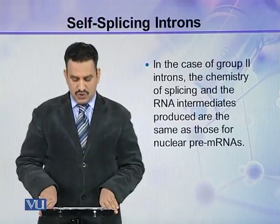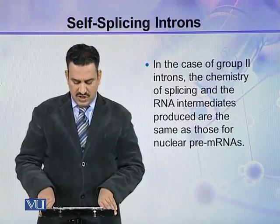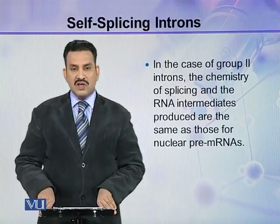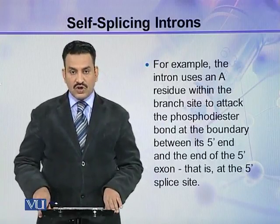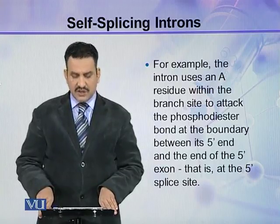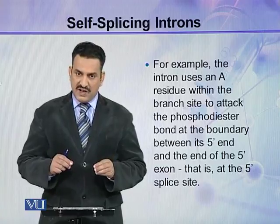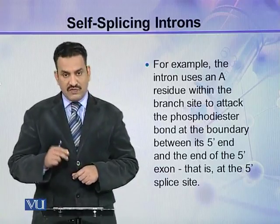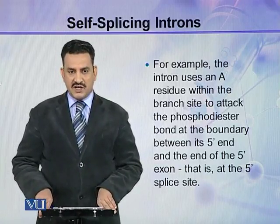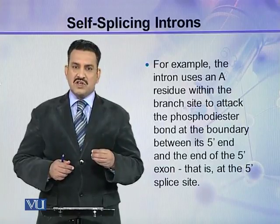In the case of group 2 introns, the chemistry of splicing and RNA intermediates produced are the same as those produced in the case of nuclear pre-mRNAs. For example, the intron uses an A residue within the branch site to attack the phosphodiester bond at the boundary between the 5' end of the 5' exon — that is, at the 5' splice site — just as seen in spliceosome-mediated splicing.